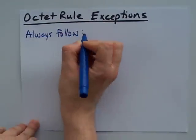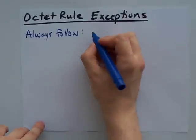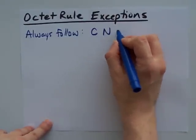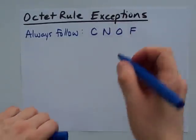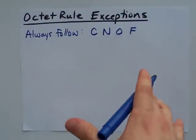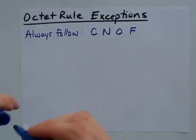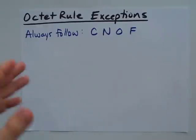The only atoms that I've found that always follow the octet rule are carbon, nitrogen, oxygen, and fluorine. Maybe neon, but neon doesn't bond very often, so these are the ones you really have to remember. Everything else is basically an exception.